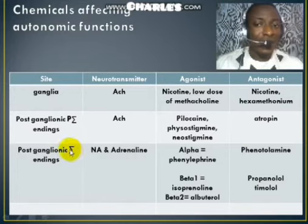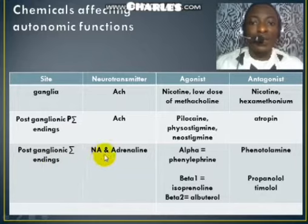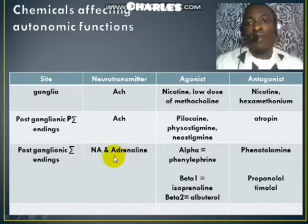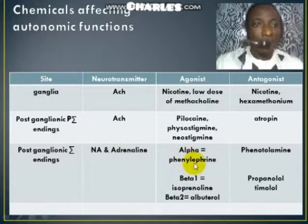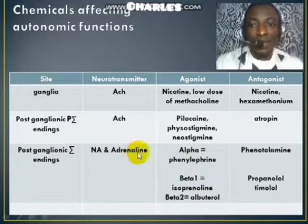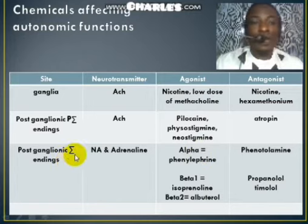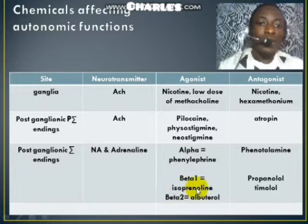For the postganglionic sympathetic neuron or nerve fiber, the neurotransmitters used are noradrenaline and adrenaline. The receptors here are the alpha and beta receptors. For the alpha receptors, phenylephrine is an agonist, so it stimulates the alpha receptors of the postganglionic sympathetic endings.